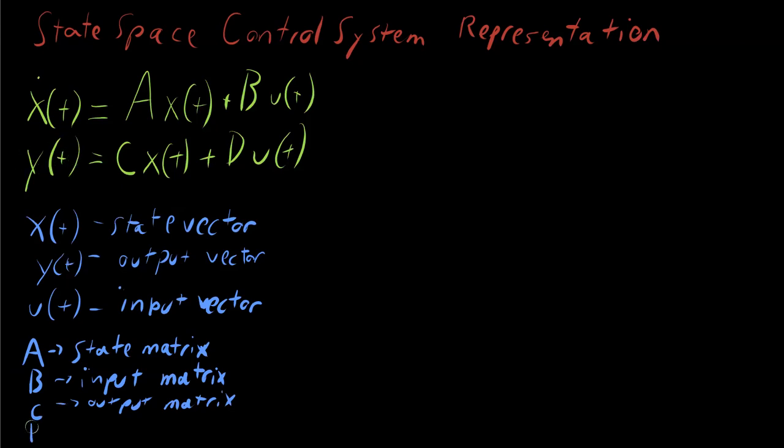Finally, we have the last matrix D. D is the feed through, feed forward. We'll call it the feed forward matrix. The reason it's called feed forward is because this takes the input, the control, the input vector itself and directly contributes to y of t, bypassing any state functions at all.